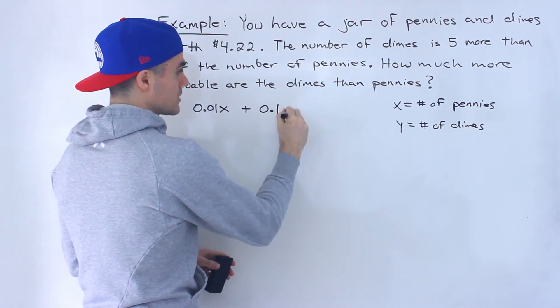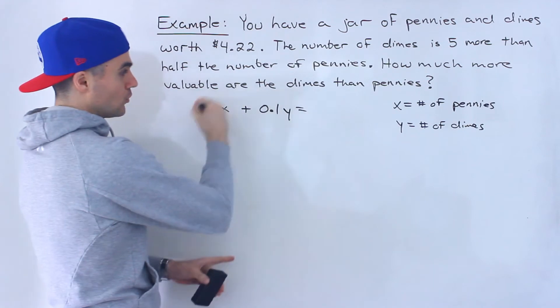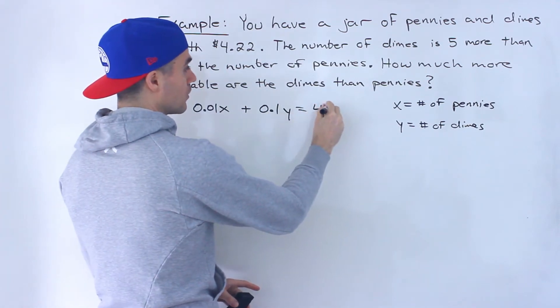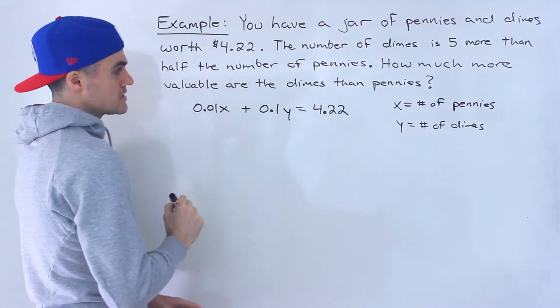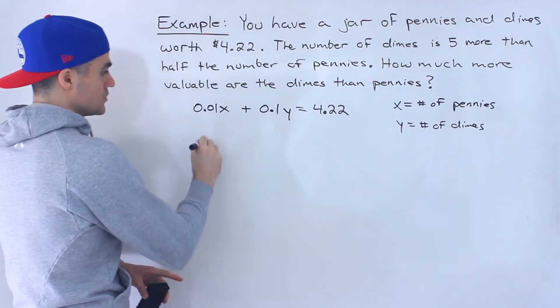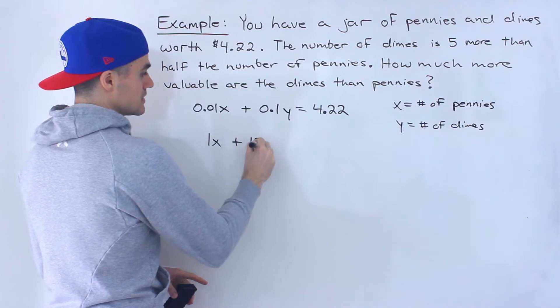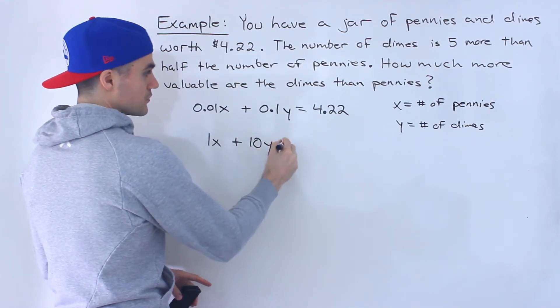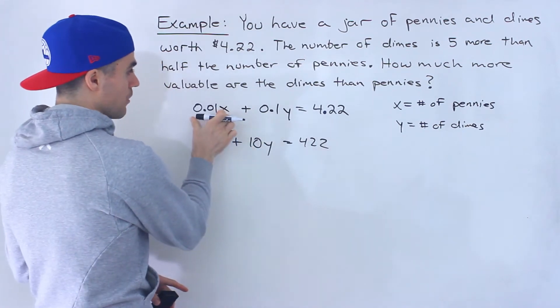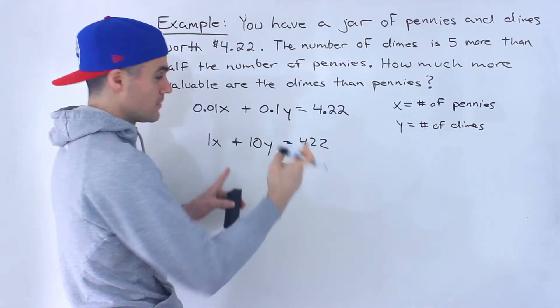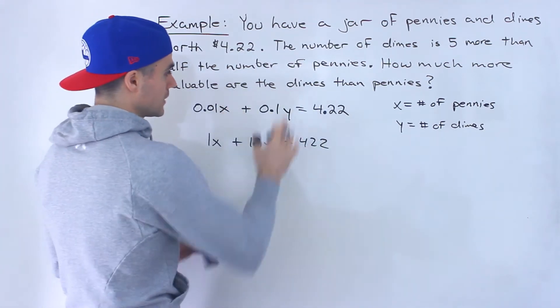You could say 1 cent plus 10 cents times the number of dimes equals 422 cents. You'd basically just multiply all of these by 100. Both of these equations are the same. I'm going to keep it in dollars.